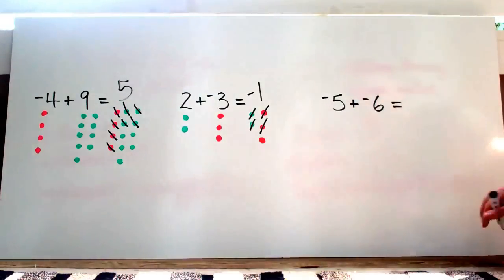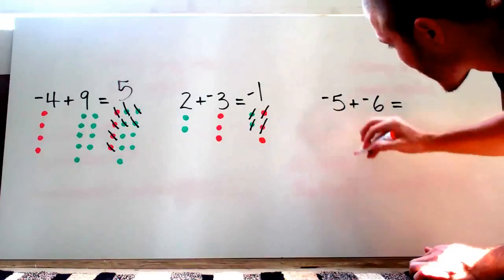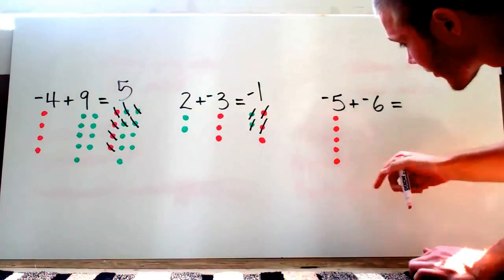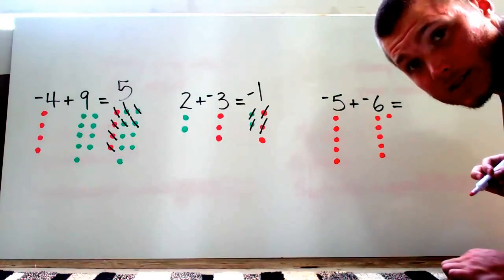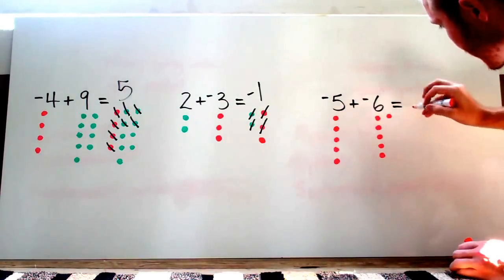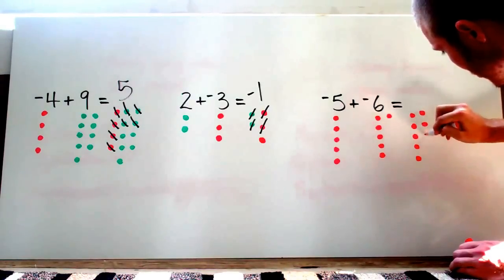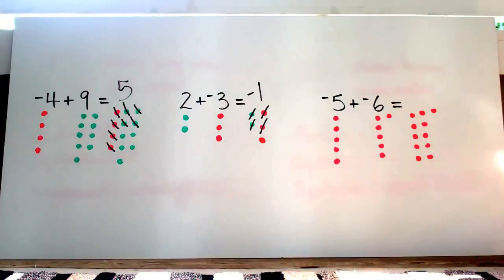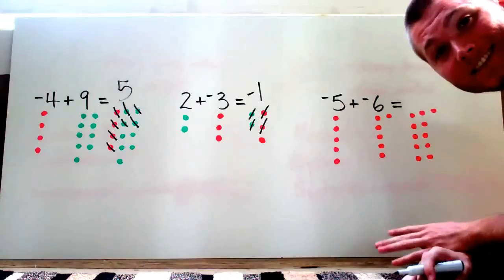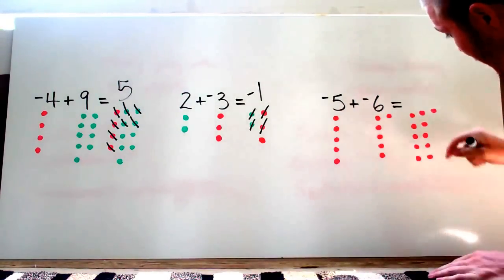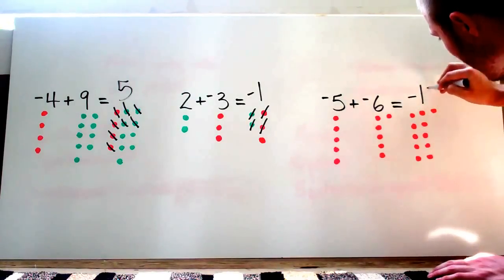And for the last one — adding two negative integers. We're going to use red to represent the negative units. I've got one, two, three, four, five. And then negative six: one, two, three, four, five, six. I'm adding, so I'm going to combine them together. I have to move these five over and then use these six. I'm going to cancel out nothing — I don't have a green unit to cancel out with a red unit. So I've got one, two, three, four, five, six, seven, eight, nine, ten, eleven negative units, which gives me an answer of negative eleven.